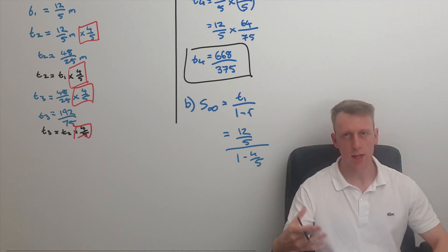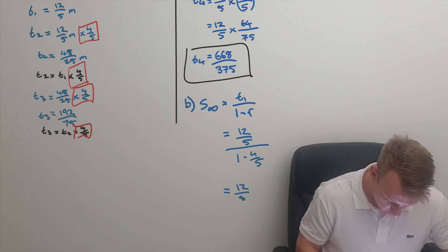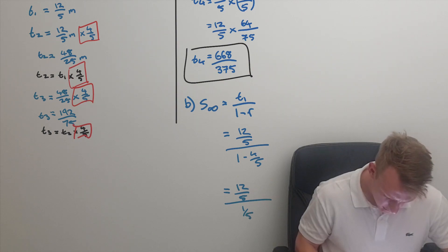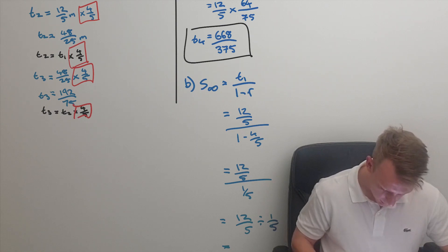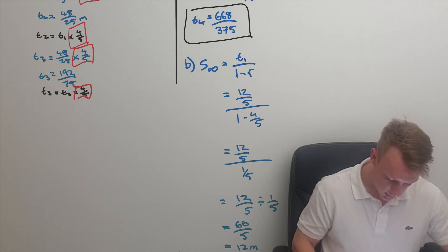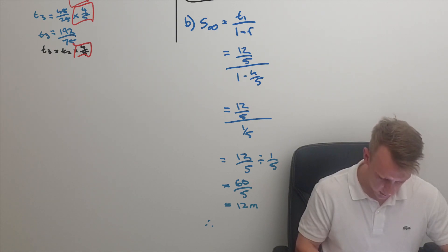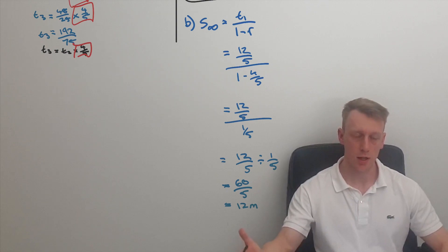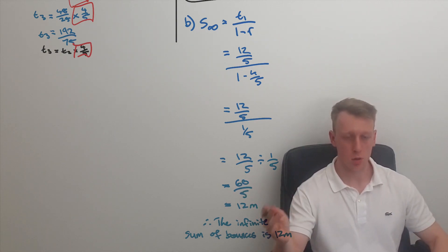Solving without a calculator, we get twelve fifths divided by one fifth. Writing it as division of fractions and cross-multiplying gives 60 on 5, which equals 12 meters. Therefore, the infinite sum of bounce heights is 12 meters. Now we're going to look at another complex familiar style question, this time with arithmetic sequencing.